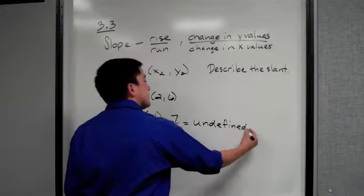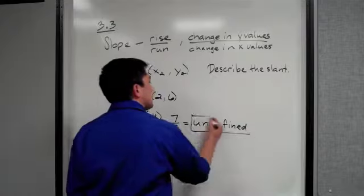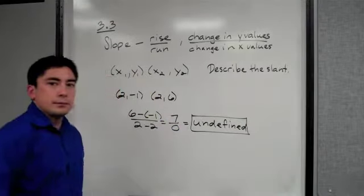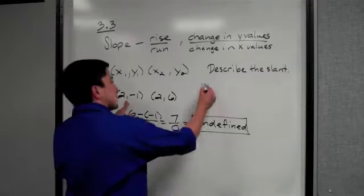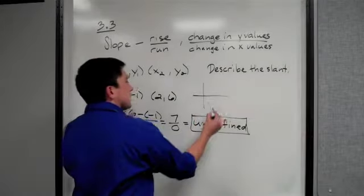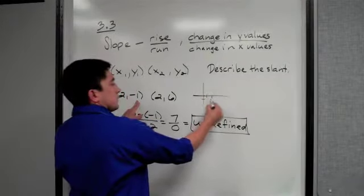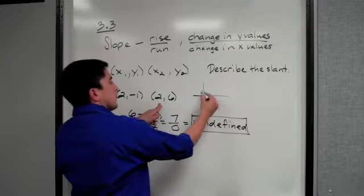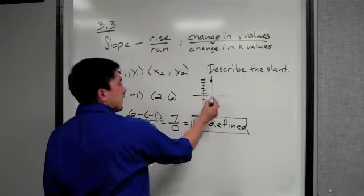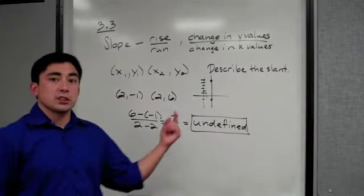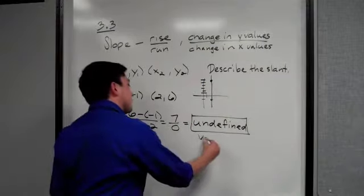Seven or anything divided by zero is not zero. Technically the word we use is undefined, so your slope is undefined. To describe that, what this looks like if you were to graph this - over 2 down 1, or over 2 up 6 - this is a bad graph.